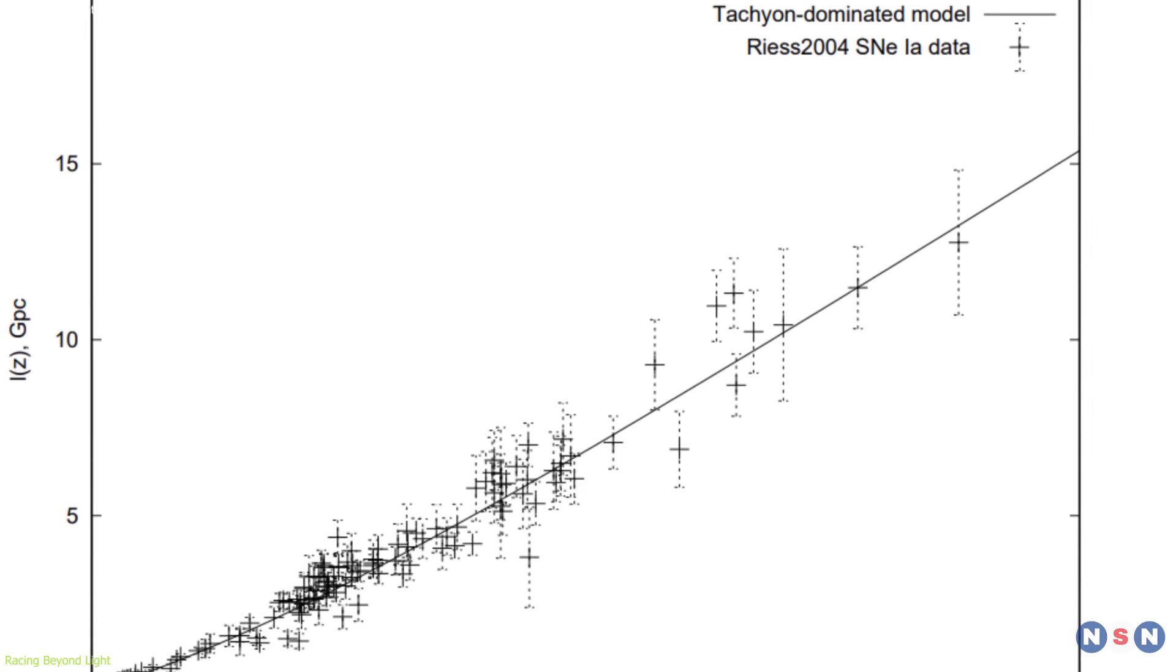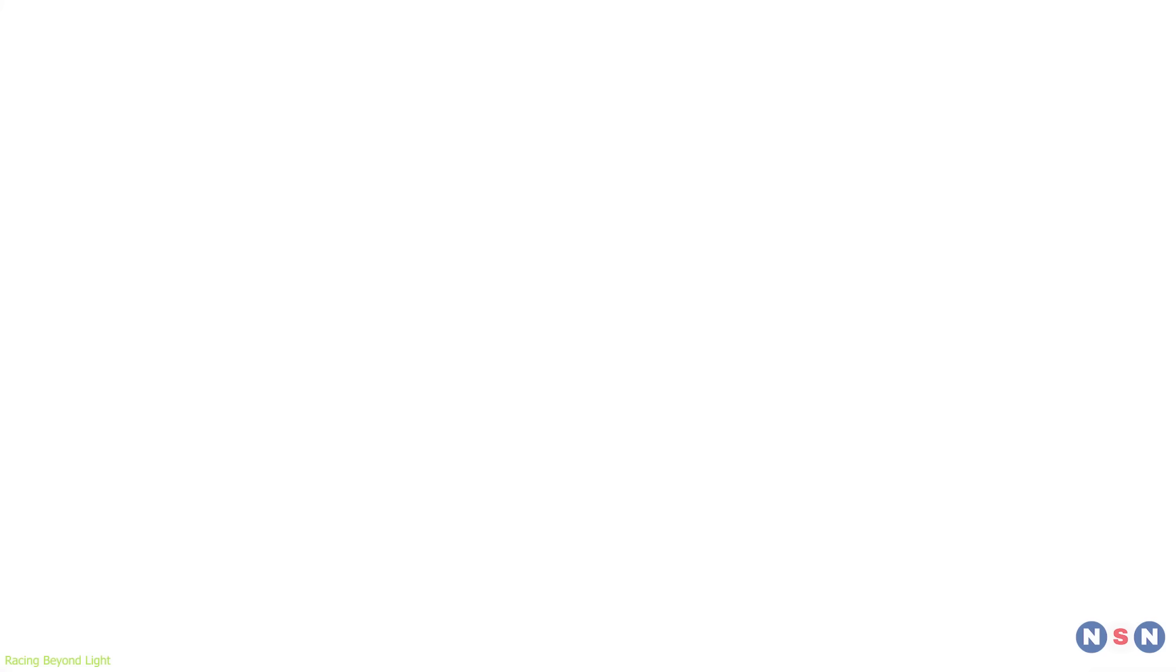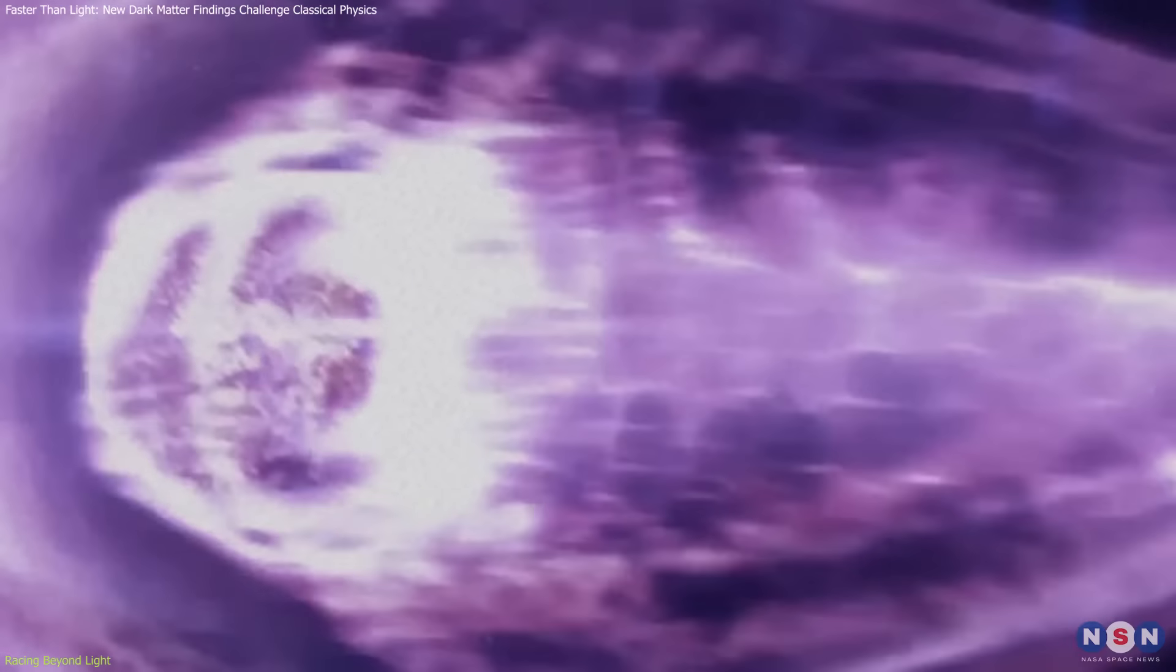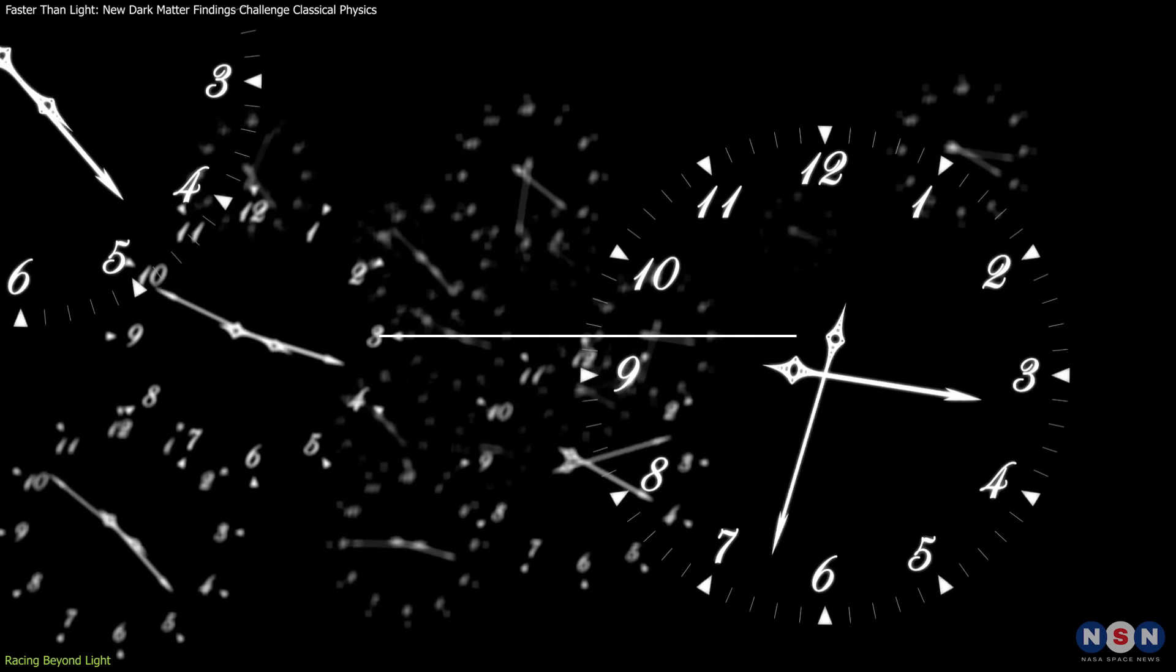The tachyon model was applied to this data, revealing a universe that initially decelerates before accelerating, which is a pattern that could be explained by the unique energy properties of tachyons as they influence the fabric of spacetime.